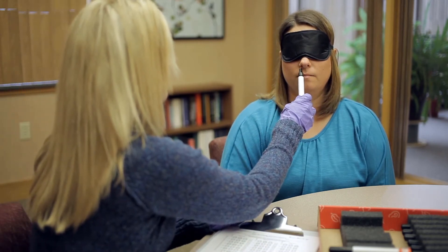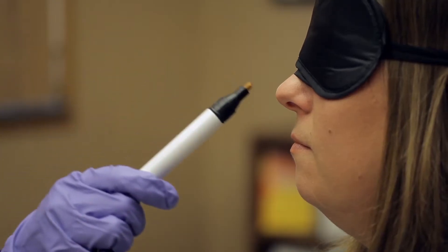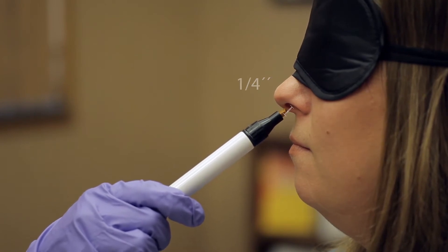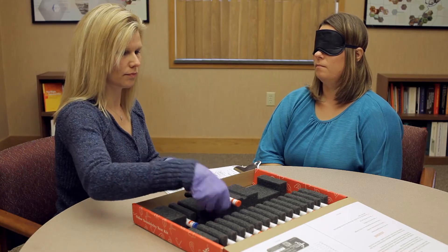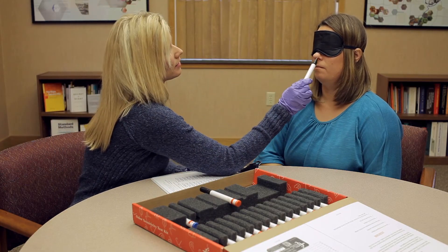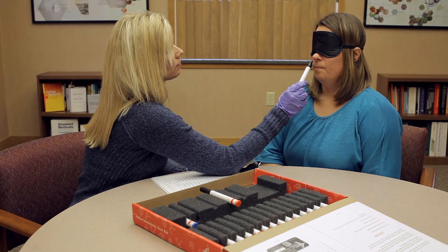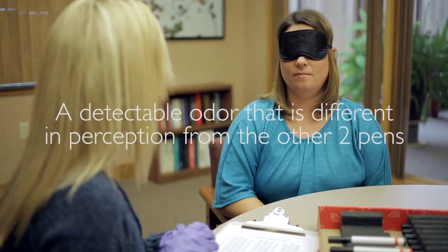One, sniff, sniff. Note the position of the pens under the nose. The pen tip is held one-quarter inch from the opening of the nostril, at a 45-degree angle. Now, the test individual must select one of the three pens. The test individual will indicate which pen has a detectable odor that is different in perception from the other two pens. I'll repeat that,